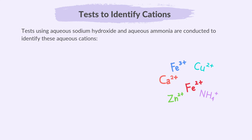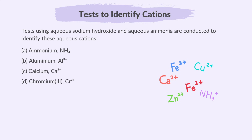Next, let's explore tests using aqueous sodium hydroxide and aqueous ammonia to identify these cations in aqueous solutions: ammonium, aluminium, calcium, chromium, copper 2, iron 2, iron 3, and zinc.